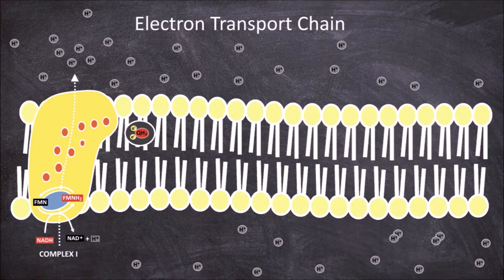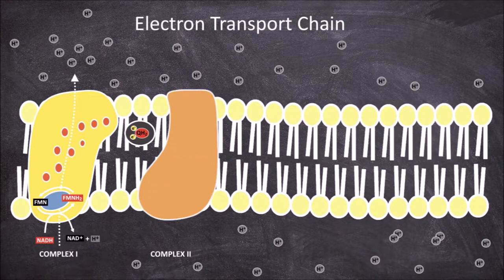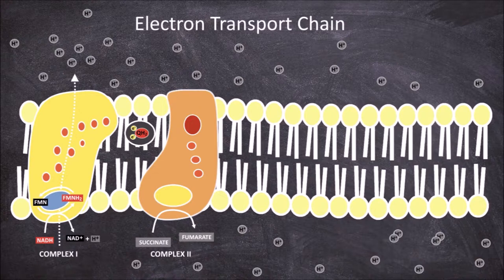The next part of the electron transport chain occurs at complex 2 and occurs parallel to the processes in complex 1. Complex 2, also known as succinate coenzyme Q reductase or succinate dehydrogenase, consists of a flavoprotein, a chain of 3 iron-sulfur redox centers, and a heme B containing subunit. When succinate is oxidized into fumarate in the citric acid cycle, the oxidization produces 2 hydrogens and 2 electrons. These 2 electrons are accepted by FAD, which is bound to the flavoprotein of complex 2, reducing it to form FADH2.